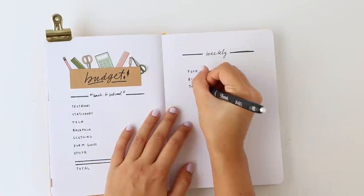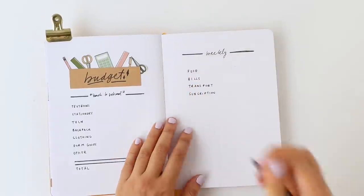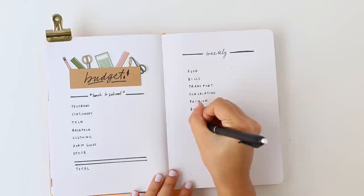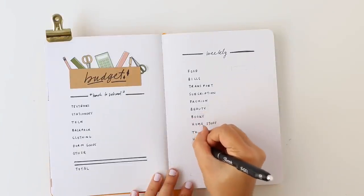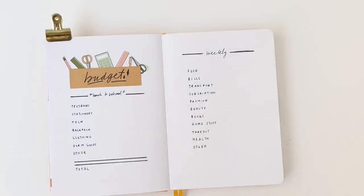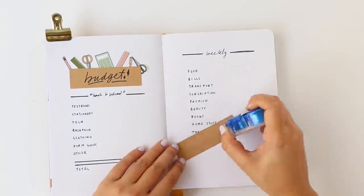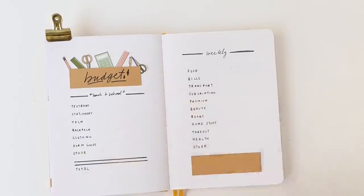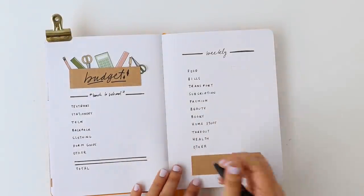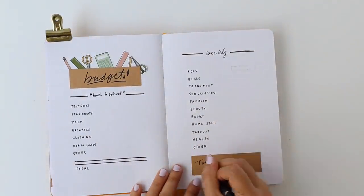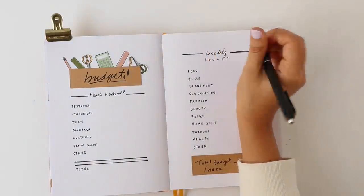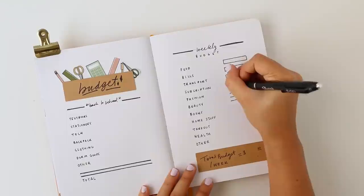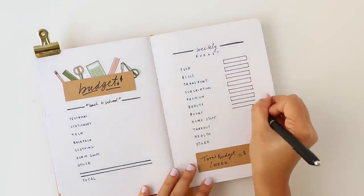The right page is a spot to create a budget for the more weekly purchases. Things like food, bills, transport, subscriptions, fashion, beauty, books, home, takeout, health, etc. Whether you formally track your spending or not, sitting down to create even a rough budget can help equip you with more knowledge when you are at the store debating the pros and cons of making a purchase. Especially if you're a student just starting to take more control over your finances, I find a budget can be really helpful in strengthening your relationship with money.